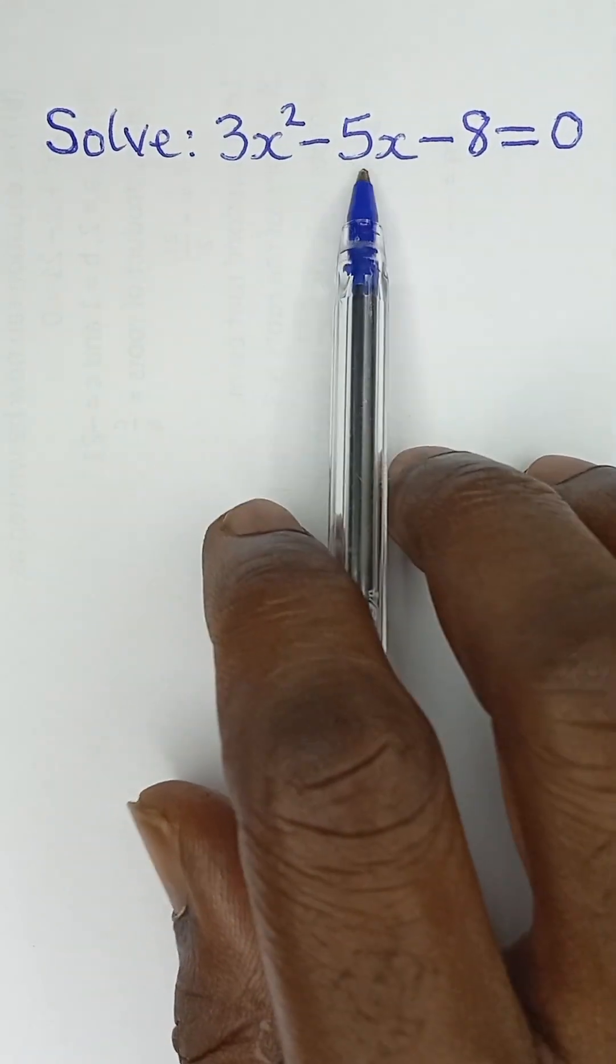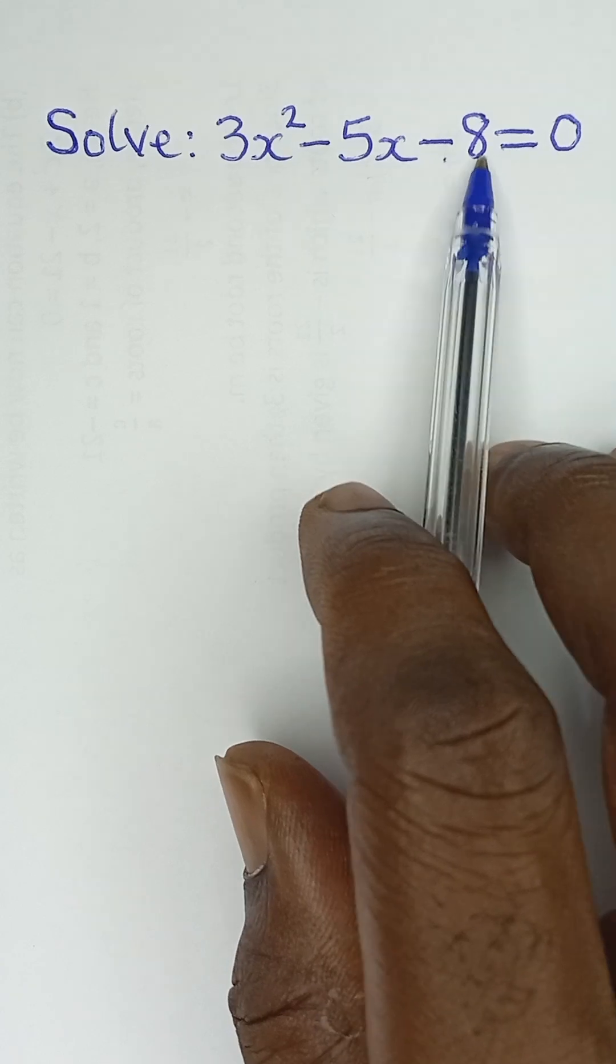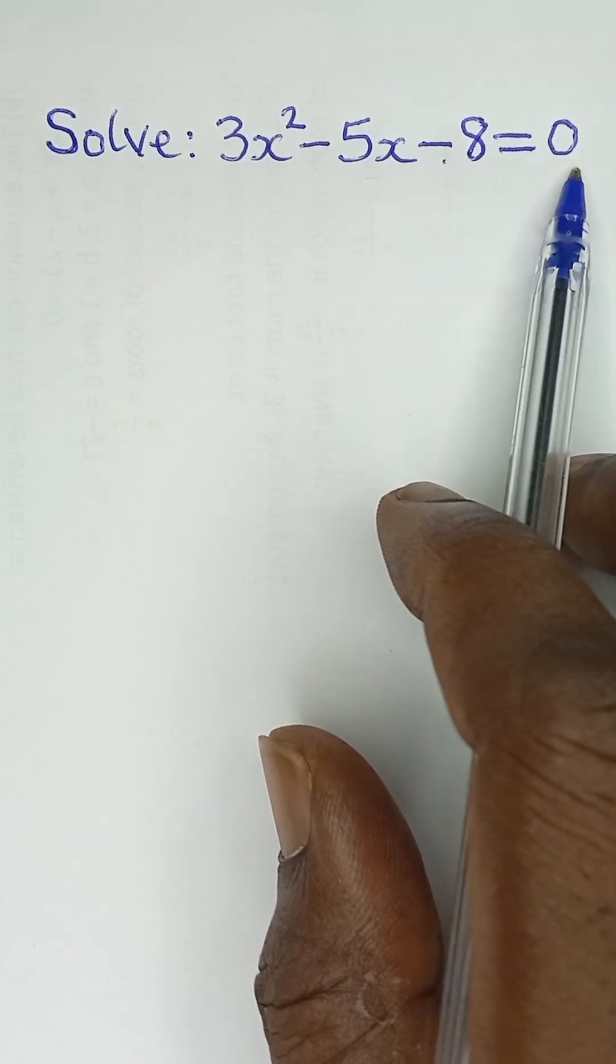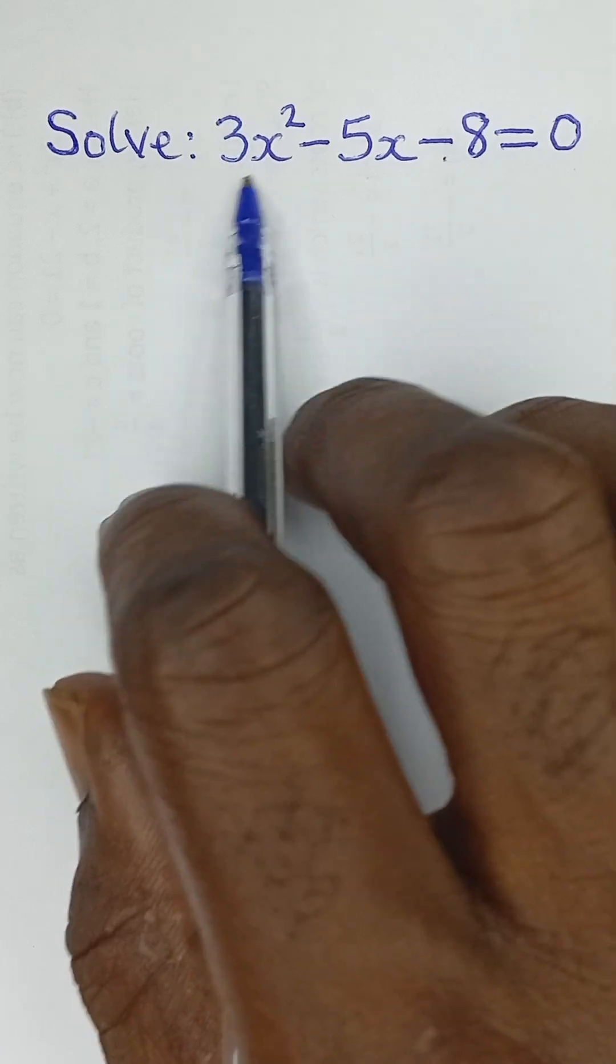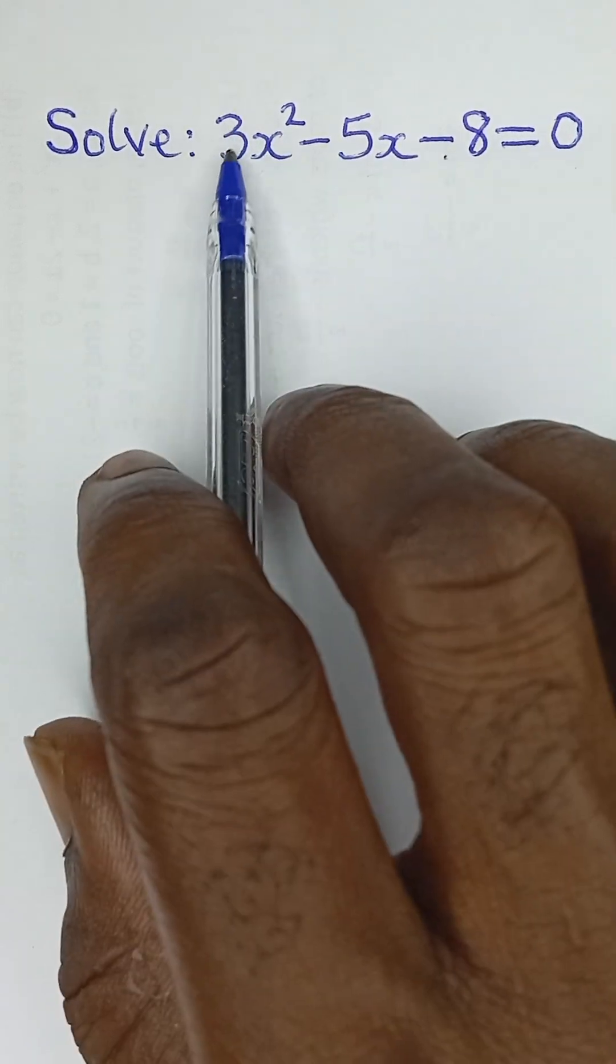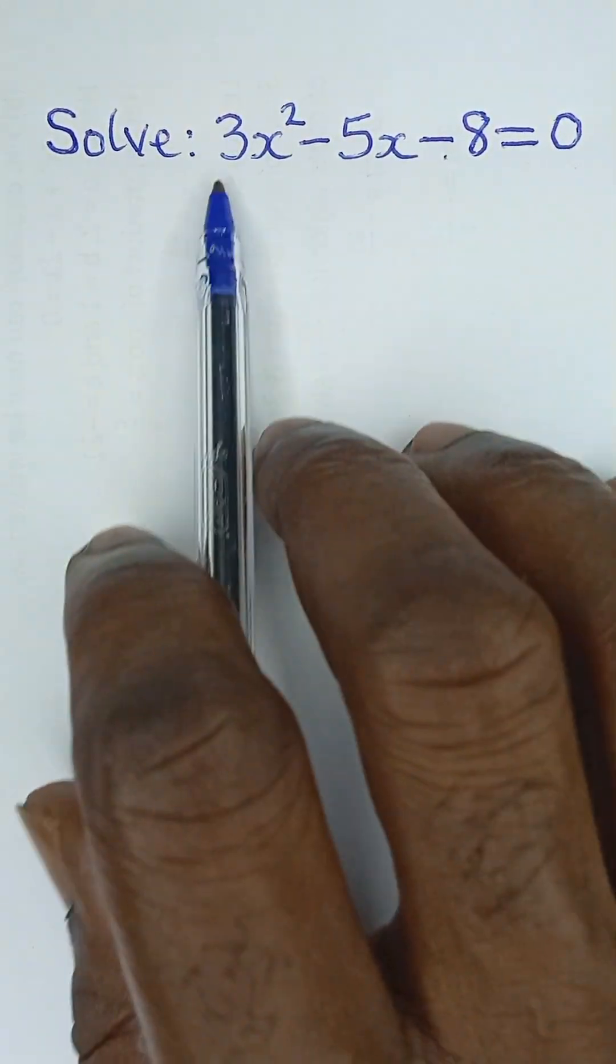Solve 3x squared minus 5x minus 8 equals 0. Now, there's one special trick that we can use to solve this. Because of the number that we have here, we can simply solve it in a special way.